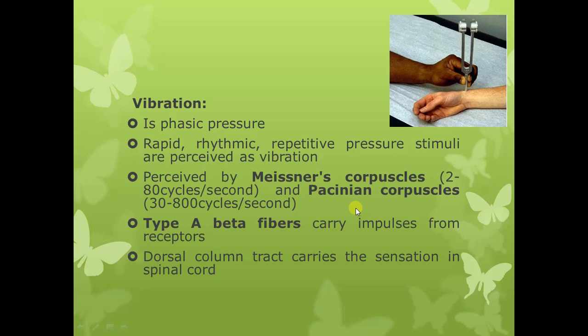We start with our lecture. First, we are going to talk about the vibration sense. Vibration sense is basically phasic pressure, defined as rapid, rhythmic and repetitive pressure stimuli. These are perceived as vibration. When you place a vibrating tuning fork on some part of your body, you feel a buzzing sensation. This buzzing sensation that you feel when you put a vibrating tuning fork on a part of your body is called vibration.